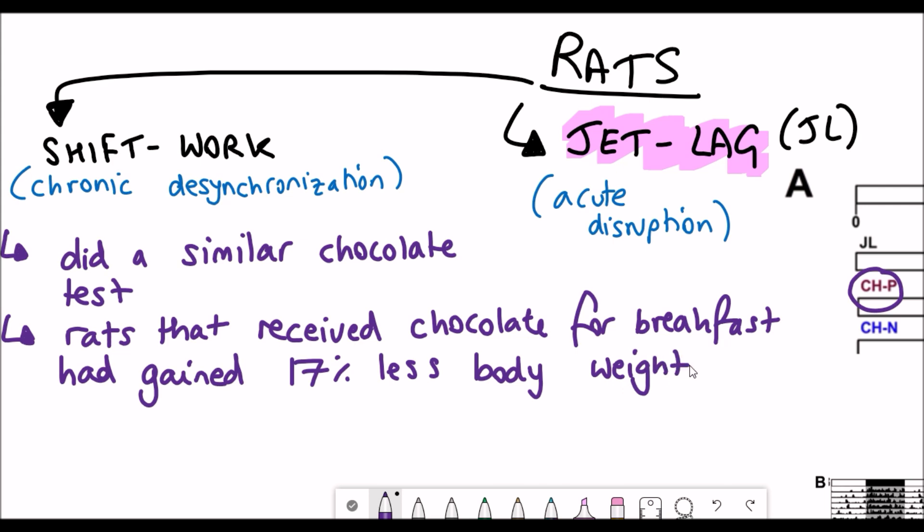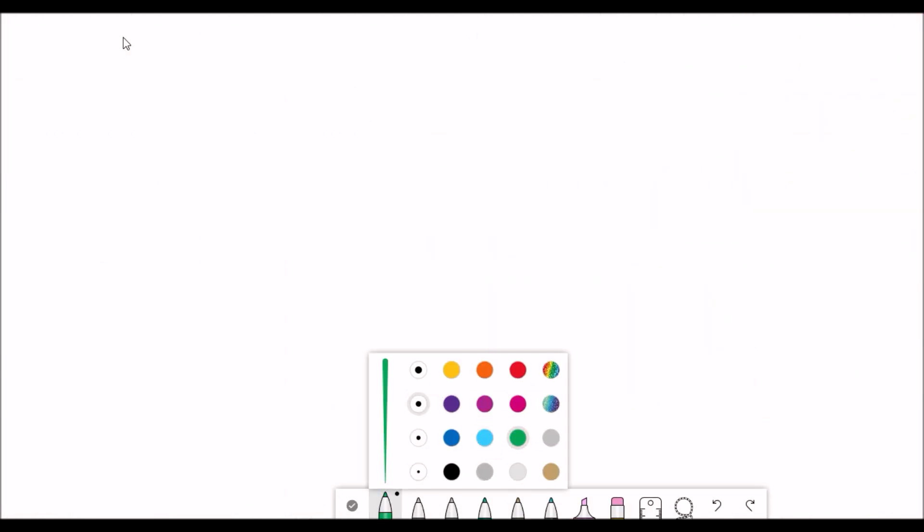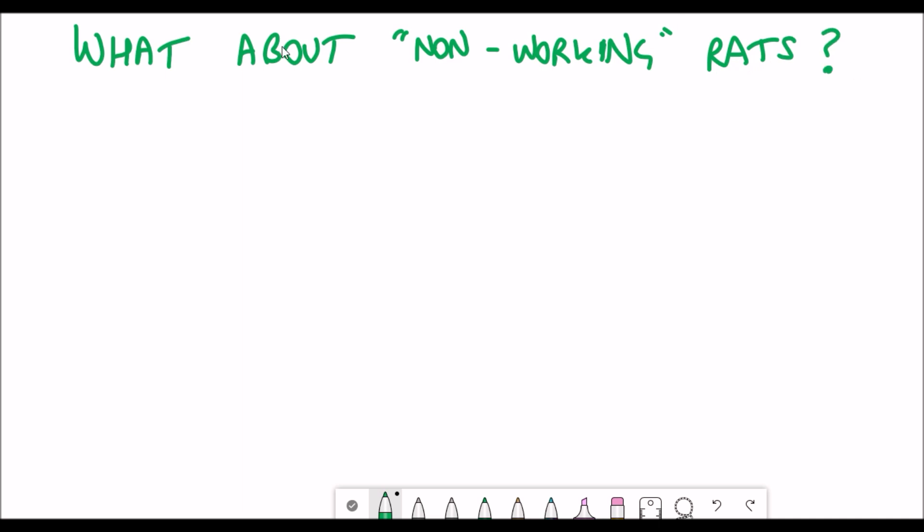Interestingly what they found was that rats that received chocolate for breakfast gained 17% less body weight than the control group and 24% less than the shift worker rats. So this reduces some of the severe consequences that are seen in shift workers such as metabolic dysfunction and weight gain.